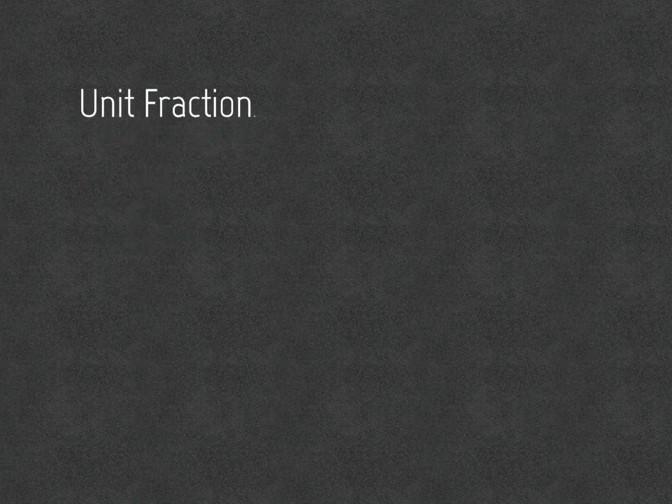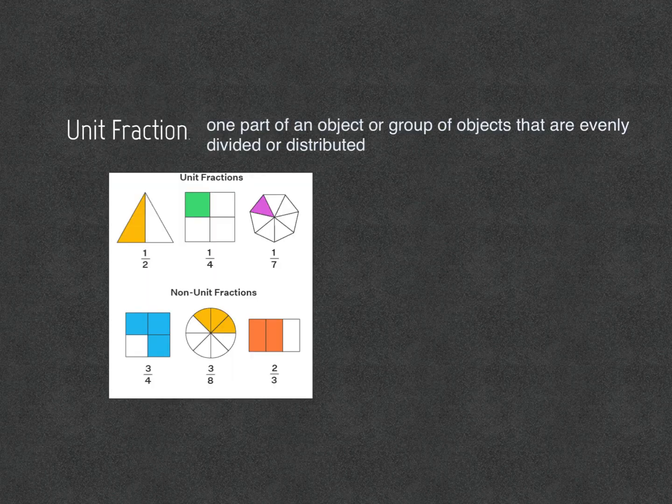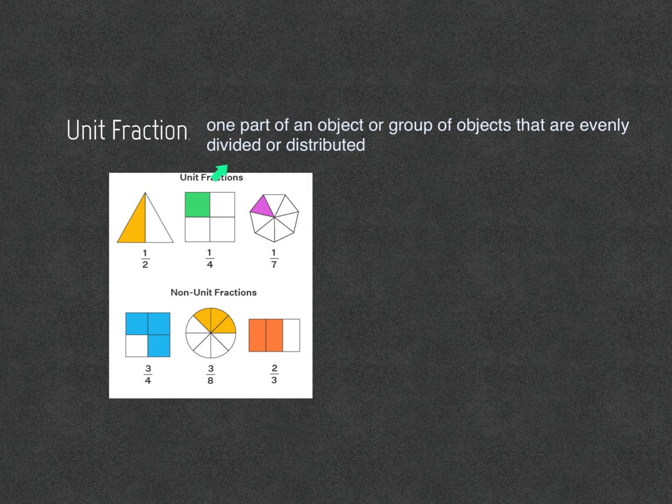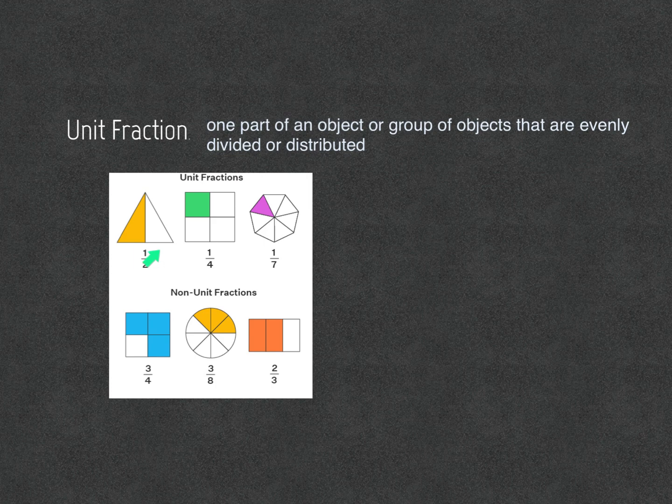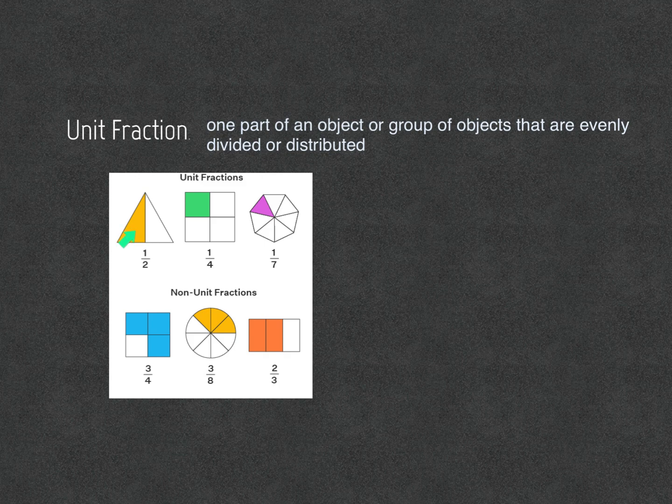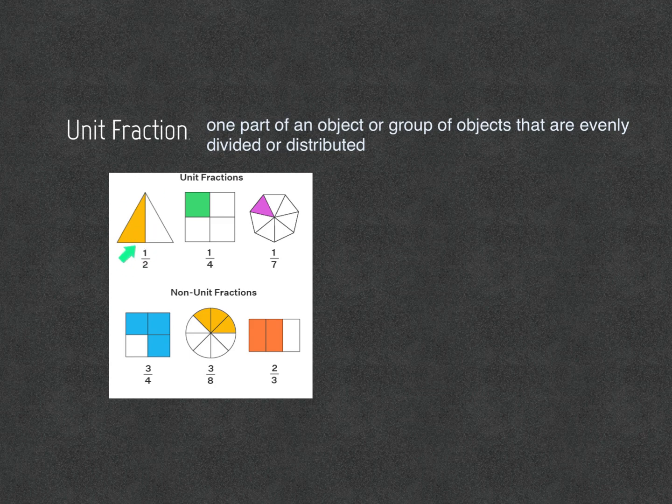Unit fraction. A unit fraction is one part of an object or group of objects that are evenly distributed or divided. For example, as you can see in this picture, one half of the whole triangle is shaded in. So, one out of two, one over two, is the fraction for this triangle.